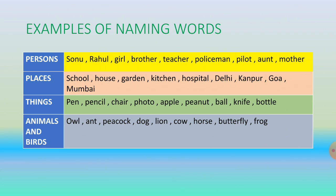Places: school, house, garden, kitchen, hospital, Delhi, Kanpur, Goa, Mumbai — these are examples of places.